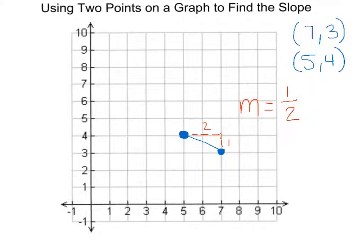However, are we done? We're not done. Our line, let's look at it from left to right. It's moving in a downward fashion. So this means that we have to have a negative sign.